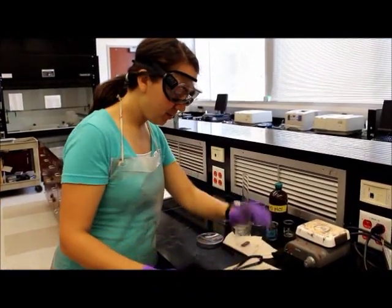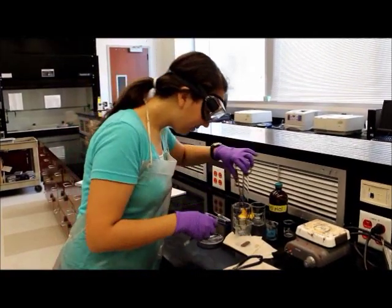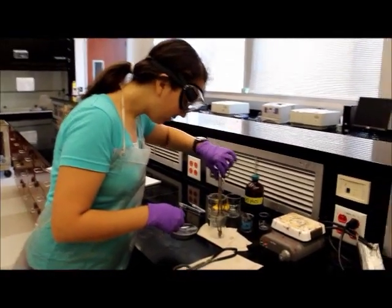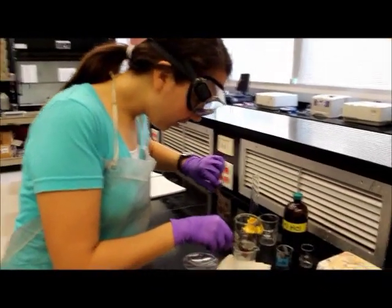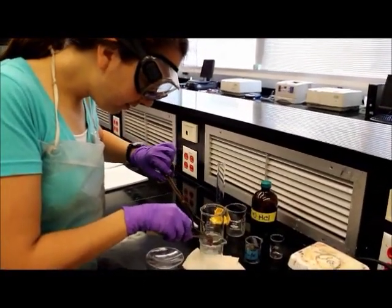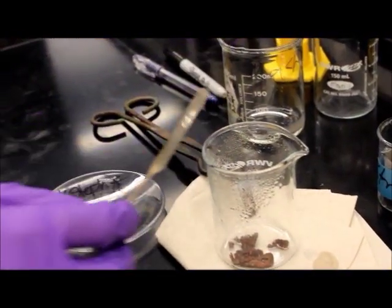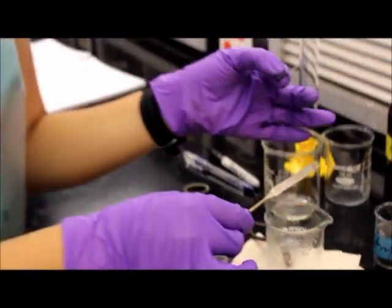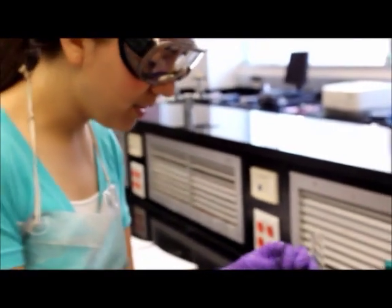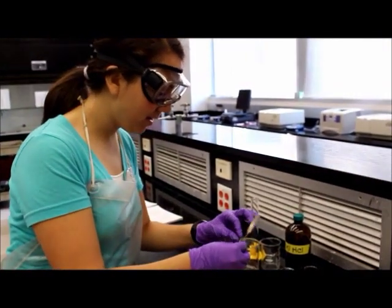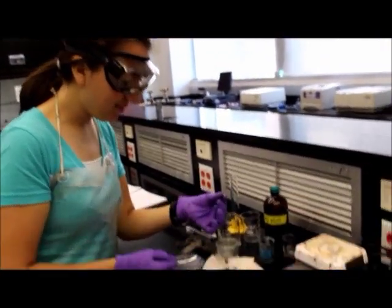Next, you will take your zinc strip and scrape off your precipitate. Just a side note, you do not want to use a rubber policeman for this because the precipitate will stick to the rubber and you'll have a really hard time getting it off.